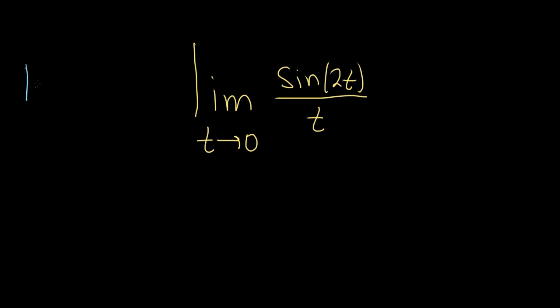The formula says if you have the limit as x approaches 0 of sine x over x, that is equal to 1. So that's the formula that we are going to use.